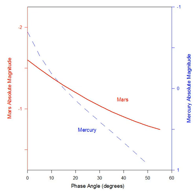Approaching phase angle 0 degrees, the curve rises to a sharp peak. This surge in brightness is called the opposition effect, because for most bodies it occurs at astronomical opposition when the body is opposite from the Sun in the sky.